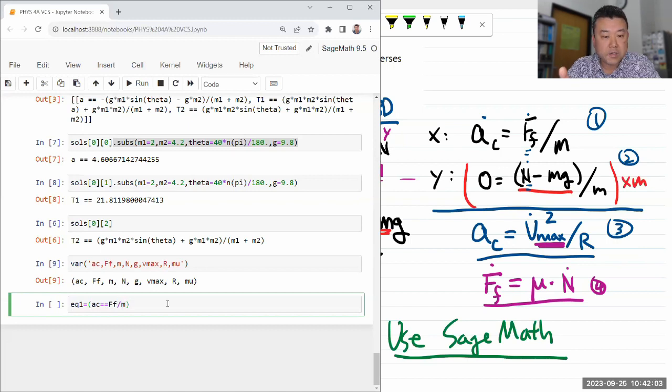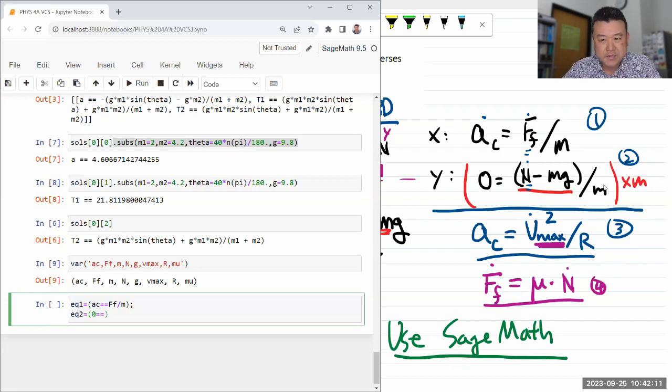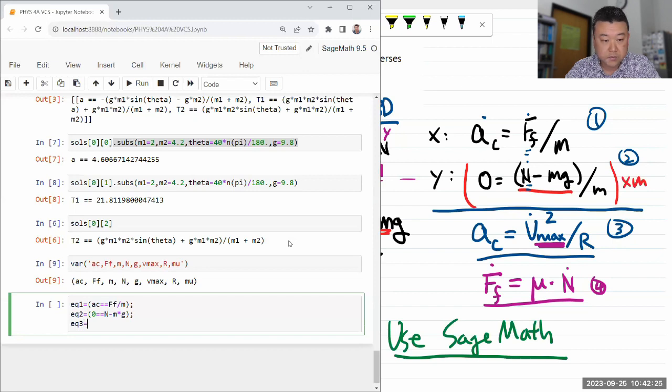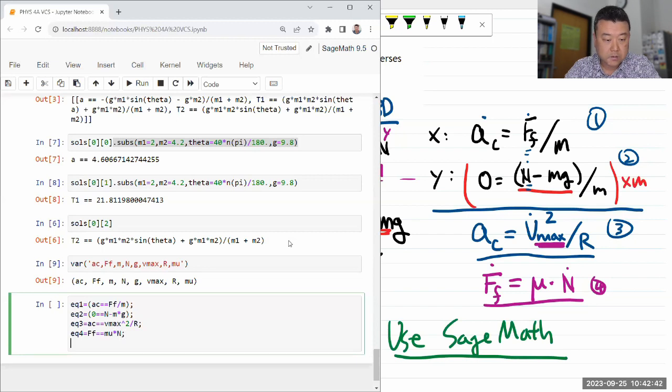Equation one is acceleration is equal to friction force time divided by mass. Oh, I might run into an issue. We'll see later. Equation two is equal to zero is equal to, and I'm going to simplify a little bit here. Instead of dividing by M, I'll say N minus MG. N minus M times G. And so I'm writing down the version where I've multiplied through by M already. Equation three is equal to AC. AC is equal to Vmax squared divided by R. Equation four is equal to friction force is equal to mu times N.